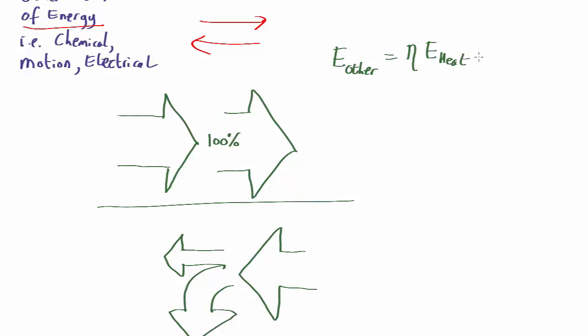So for example, a power station, let's say it's burning coal. You take chemical energy, which is another form of energy turned into heat. You can do that with 100% efficiency. But then you try and take the heat and turn it back into electricity. And only a fraction eta of it will actually succeed and the rest of it will be wasted as heat.